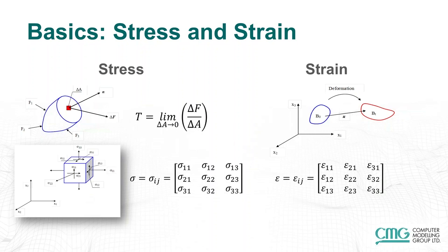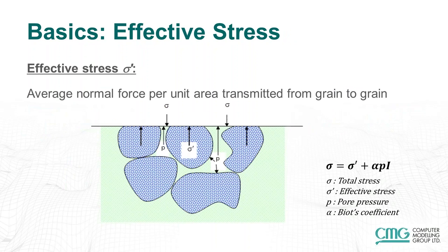Then we come to the concept of strain, which measures how much overall deformation a body has undergone when some forces act on it. Initially, there is a body shown in blue; when you put some forces on it, it changes the position and shape of the body, and a combination of both is the overall strain. Just like stress, strains are also normal or shear, and they are also represented in a big tensor. Then there is the concept of effective stress — the average normal force per unit area transmitted from grain to grain of your rock. Rock buried deep in the reservoir is acted upon by overburden stresses, and what balances these stresses is the pore pressure plus the effective stress acting on the rock grains. The equation shows: total stress = effective stress + alpha times pressure, where alpha is the Biot coefficient and IUC is the identity matrix.